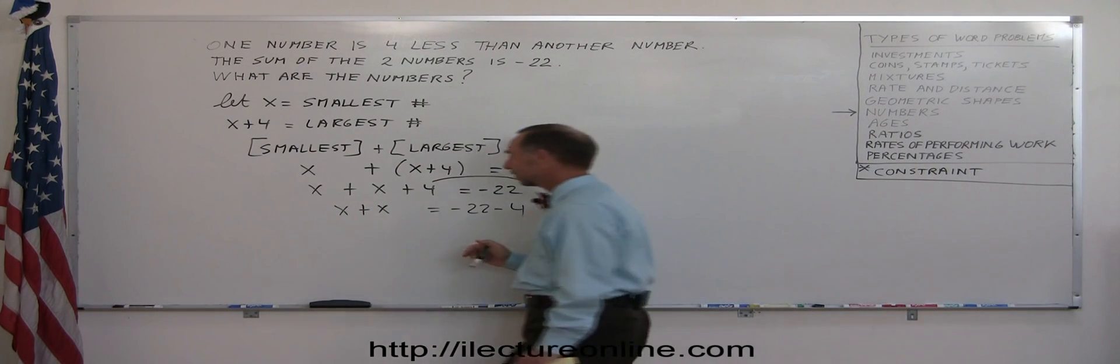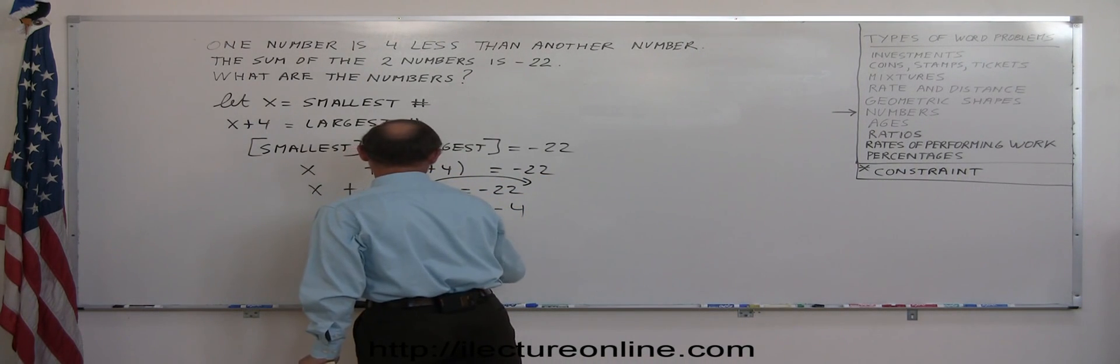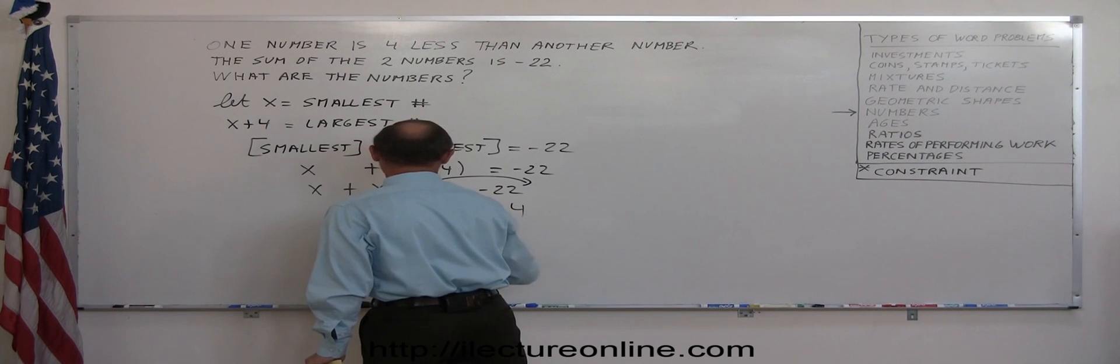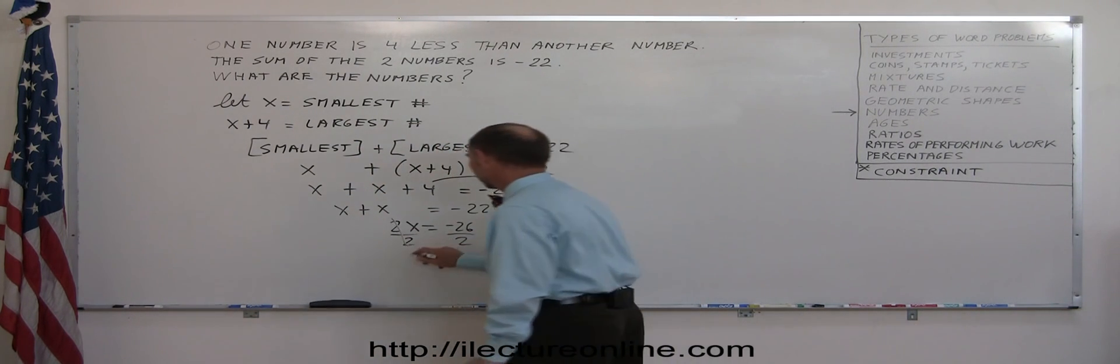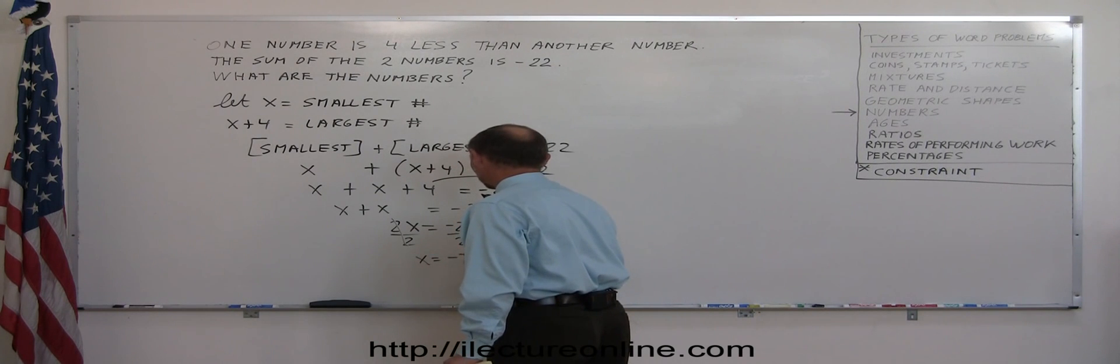Combine like terms on both sides. 2x equals minus 26. Divide both sides by the numerical coefficient of x. x equals minus 13.